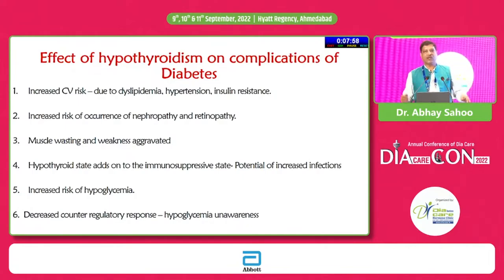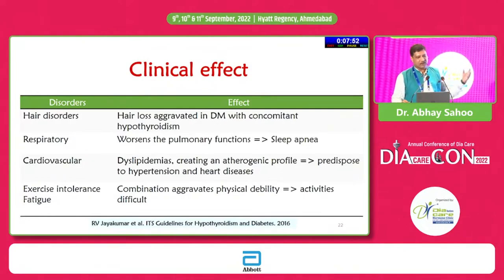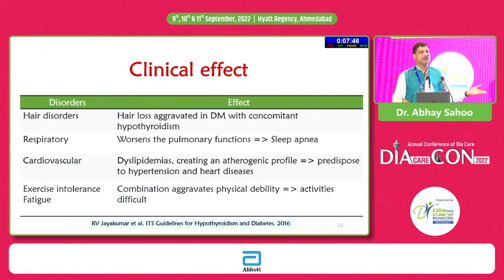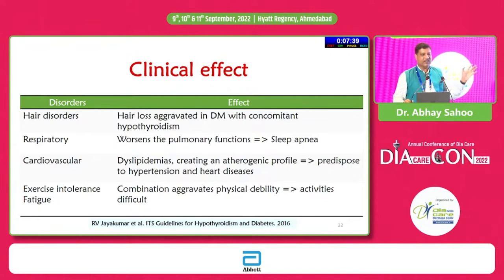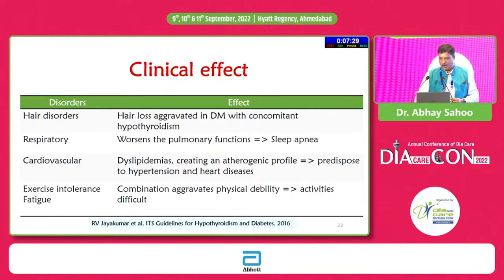The clinical effects of combined diabetes and hypothyroidism include excessive aggravated hair loss, worsening pulmonary function, more sleep apnea, increased cardiovascular risk, exercise intolerance, fatigue, and the combination is generally more detrimental from a complications standpoint.